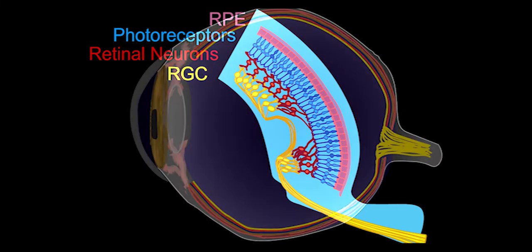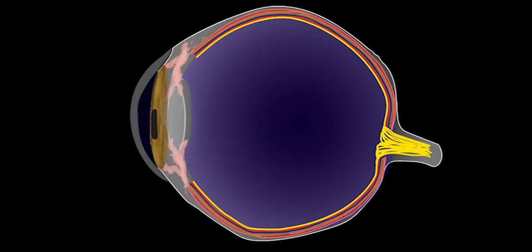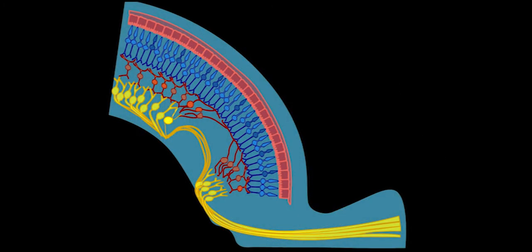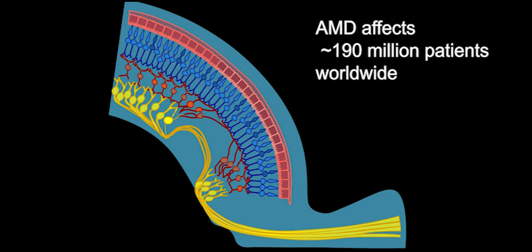Damage to any of these eye cells can cause vision loss. Stem cells are revolutionizing our approach to multiple blinding disorders. Vision can deteriorate in a variety of ways depending on the sequence of cell loss.